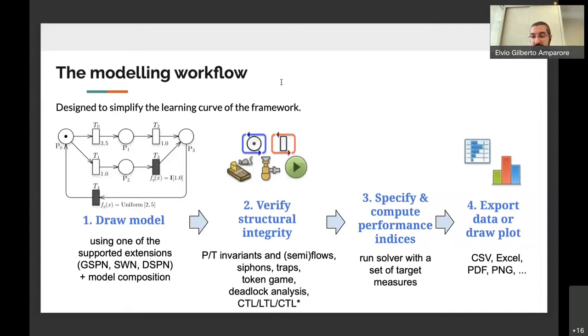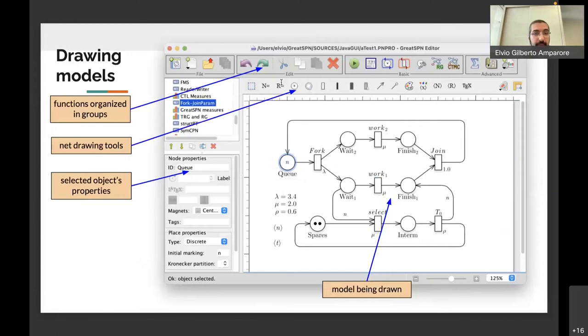Let's have a look at these four steps. Model drawing is done inside the editor, and the editor is organized this way: we have the main functions organizing the toolbar at the top level, and these are organized in groups in hierarchical groups from basic to advanced functionalities. Then there are the net drawing tools for actually drawing the Petri net that the user is interested in, and then the model being drawn is represented in this central part of the window, which can add, delete, and edit the various model components.